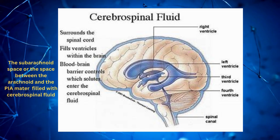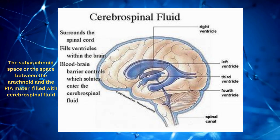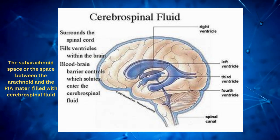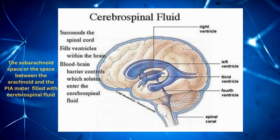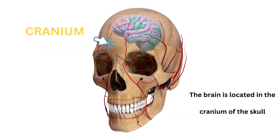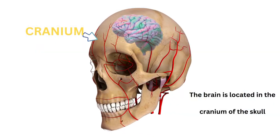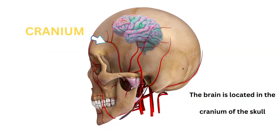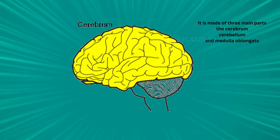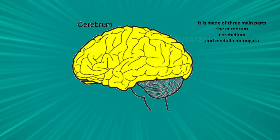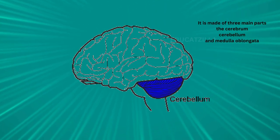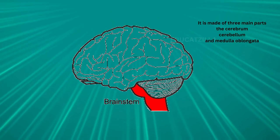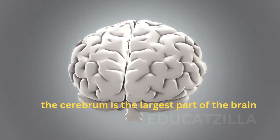The subarachnoid space, the space between the arachnoid and the pia mater, is filled with cerebrospinal fluid. The brain is located in the cranium of the skull. It is made of three main parts: the cerebrum, cerebellum, and medulla oblongata.